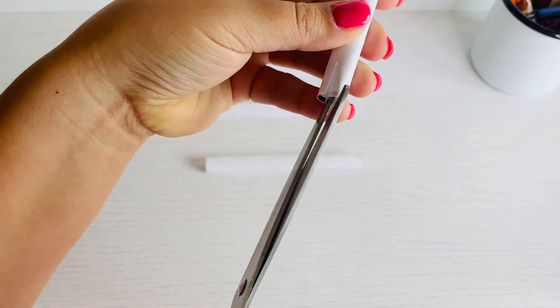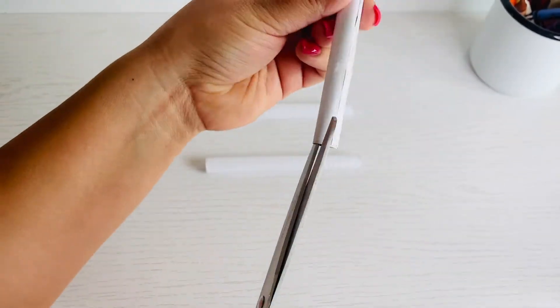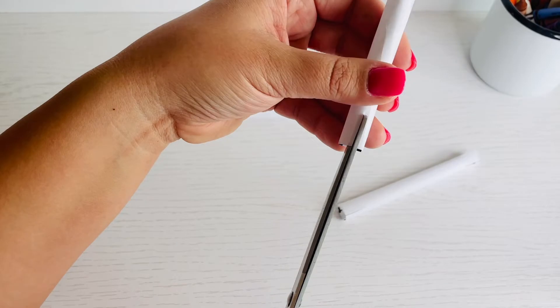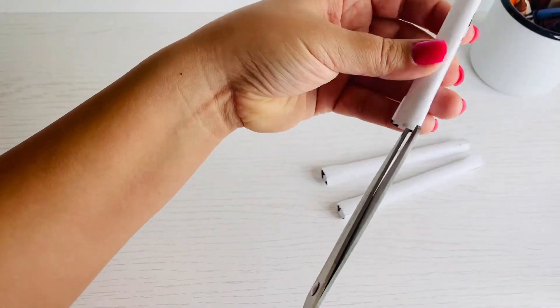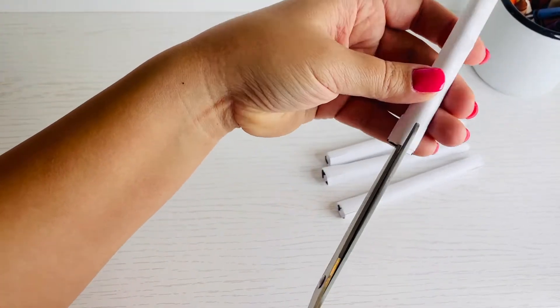On both ends of the paper tubes cut three slits. Make sure to not cut too far but not too small, enough where you can fold them later on.